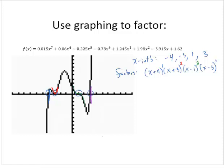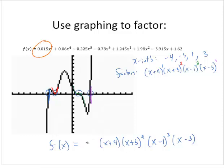So the factored form of the polynomial or function is: f(x) = 0.015(x+4)(x+3)^2(x-1)^3(x-3). Remember that the lead coefficient of the polynomial stays in front of the factors, so we have 0.015 multiplied by all of those factors.